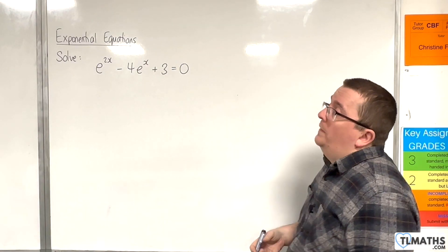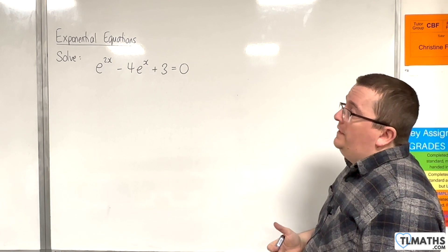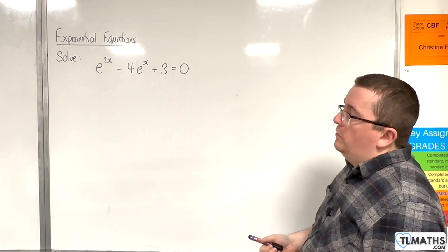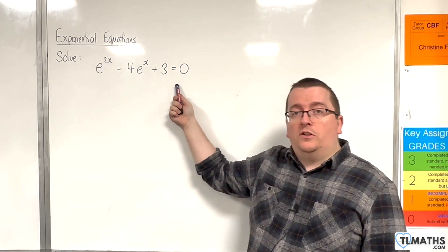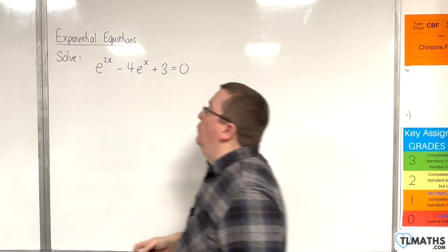So in this video I want to solve e to the 2x take away 4e to the x plus 3 equals 0. Now this is of the form of a hidden quadratic as we've seen before.